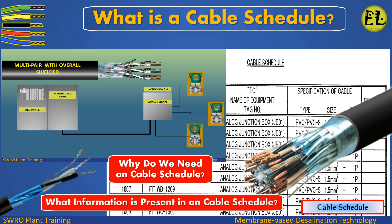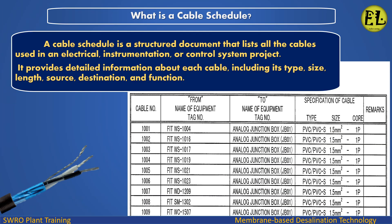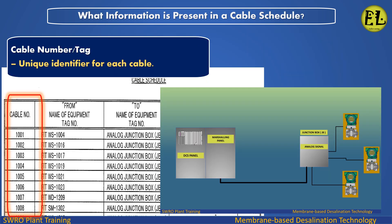What is a cable schedule? A cable schedule is a structured document that lists all the cables used in an electrical, instrumentation, or control system project. It provides detailed information about each cable, including its type, size, length, source, destination, and function.